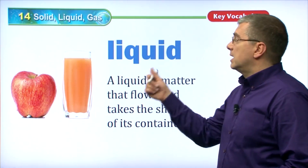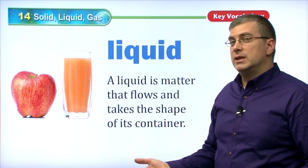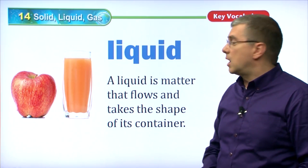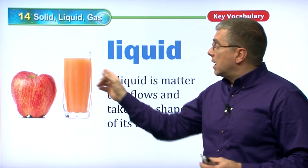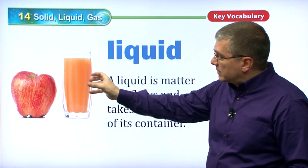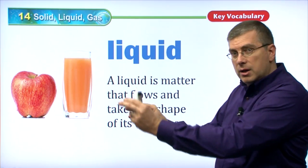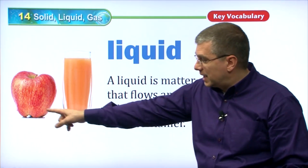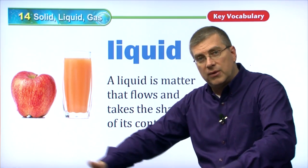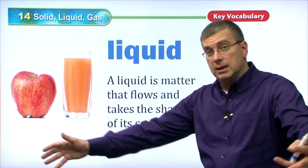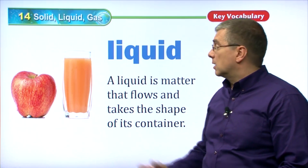Next we have a liquid. What is a liquid? How is it different from a solid? A liquid is matter that flows. In other words, if you took this glass and you turned it, that liquid would flow out of the glass onto the table or the ground and it would spread out. It would flow and move freely.